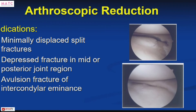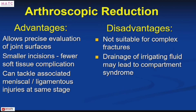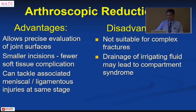To improve assessment of the articular surface, arthroscopy-assisted fixation became the next step. Under arthroscopic vision you can elevate the joint surface and, once satisfied with reduction, proceed to fixation. The problem with arthroscopy in complex fractures is a small risk of compartment syndrome from irrigating fluid. The big advantage is good assessment of articular reduction, and any associated soft tissue injuries — meniscus or ligamentous — can be addressed at the same time.